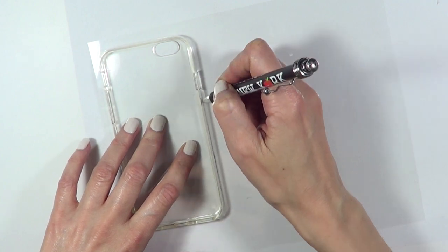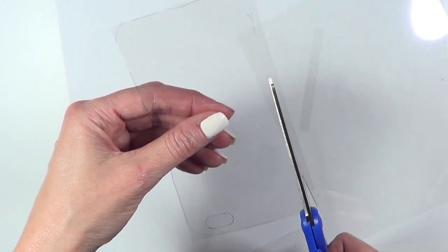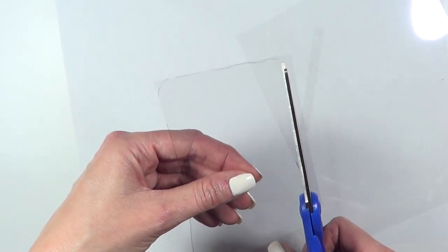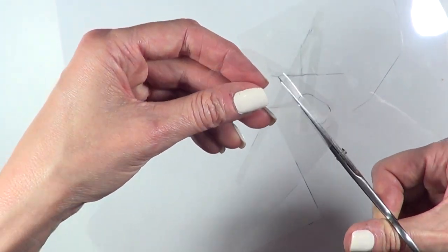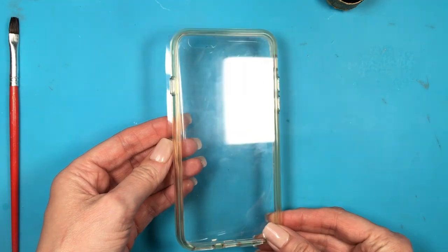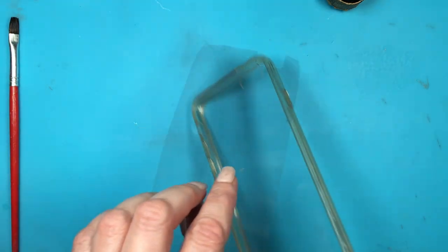I'm going to be taking another acetate sheet, tracing my phone case, a clear one, turning this again upside down, tracing the shape of this. Don't forget the camera gap. Then I'm going to be cutting this with my regular scissors and using my detailed scissors for the camera gap as well.